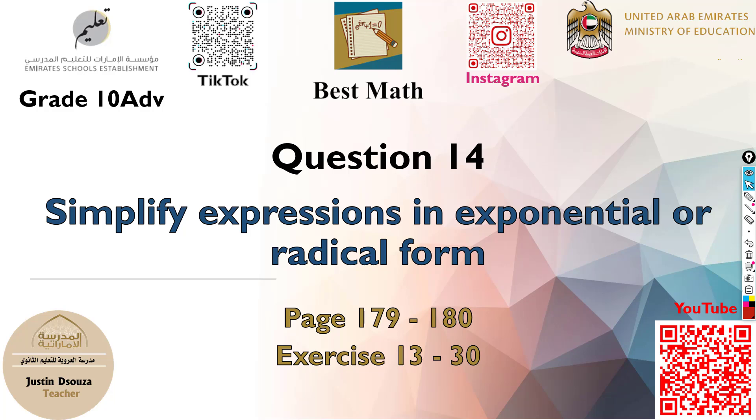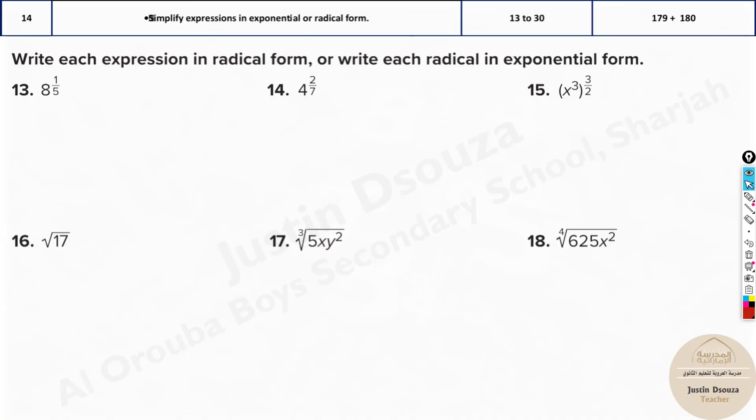Question 14, the penultimate question, is to simplify expressions in exponential or radical form. It is one of the easiest topics since it's in MCQ. If there are numbers like this, just use the calculator. But if there are variables and numbers, I'll show you how you can solve it now.